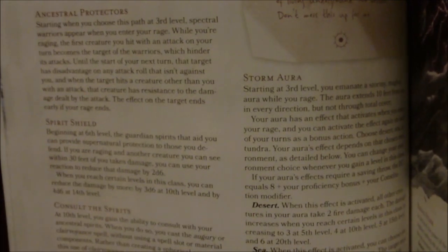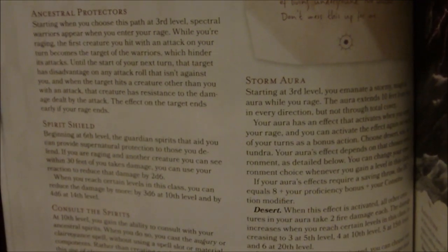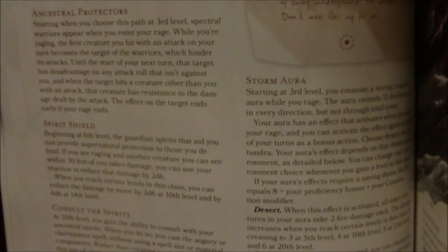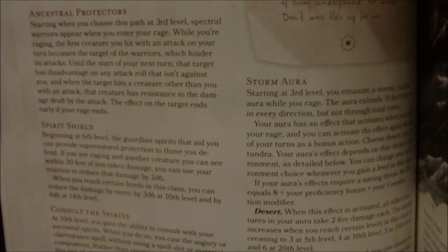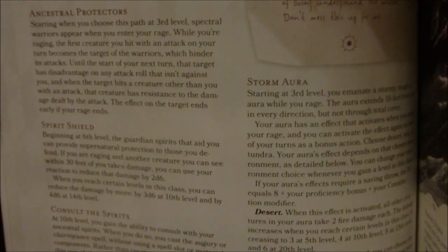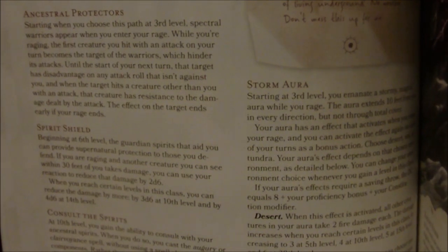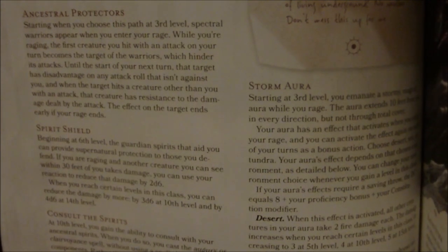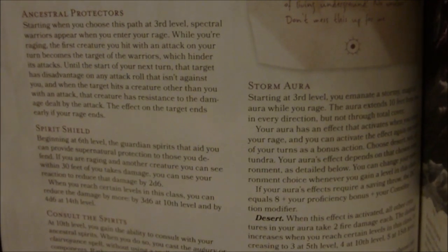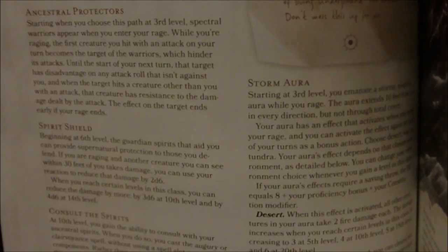At sixth level, they get Spirit Shield. The guardian spirits that aid you can provide supernatural protection to those you defend. If you are raging and another creature you can see within 30 feet of you takes damage, you can use your reaction to reduce that damage by 2d6. When you reach certain levels, you can reduce the damage by more: 3d6 at 10th level and 4d6 at 14th level.